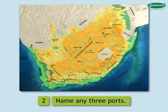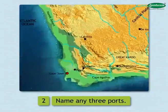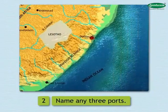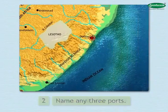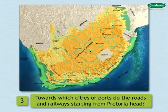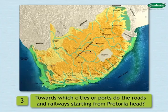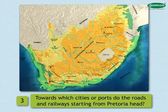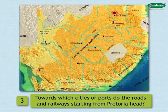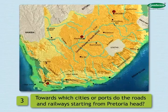2. Name any three ports. Cape Town, Port Elizabeth, and Durban are the ports in South Africa. 3. Towards which cities or ports do the roads and railways starting from Pretoria head? They head to cities like Kimberley and Worcester, and ports like Durban and Cape Town.